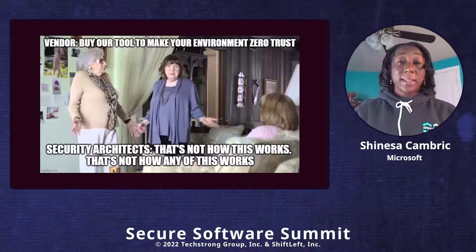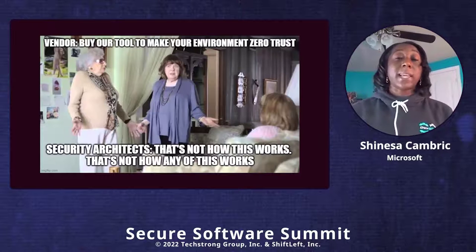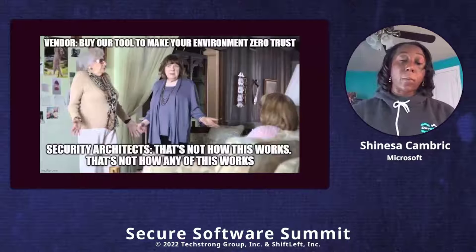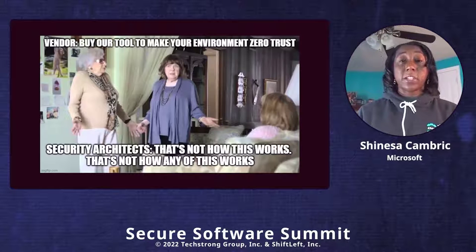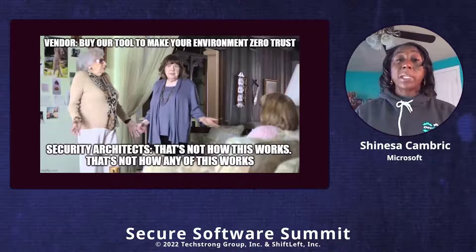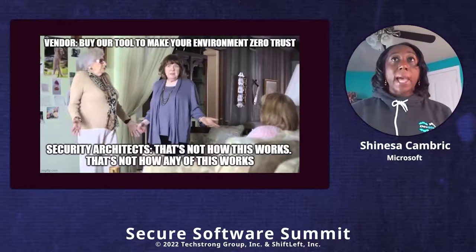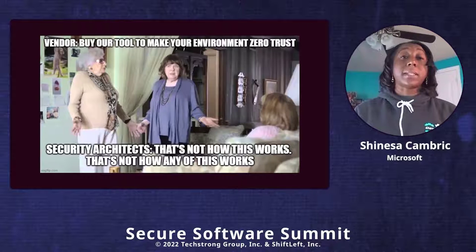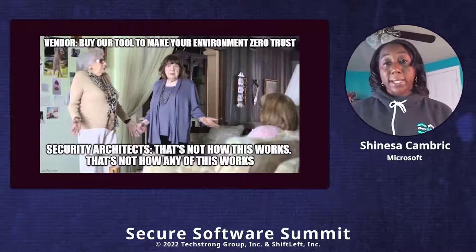The other misconception is that once you've deployed a zero trust architecture, it's like one and done — that there's nothing else you need to do to secure your environment. That's not the case either. Zero trust is more like a journey versus a destination, and as your environment evolves and changes, you'll need to go back and reassess. The final misconception is that zero trust means your environment can't be hacked or breached. Actually, one of the tenets says you need to assume breach — assume there's an attacker already within your network — and based on that, what other controls can you put in place to protect your assets and data?